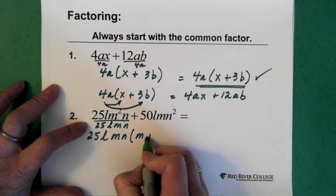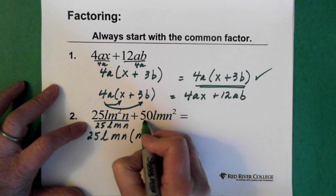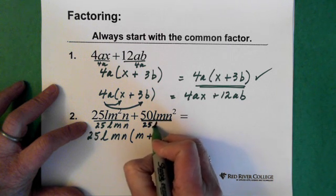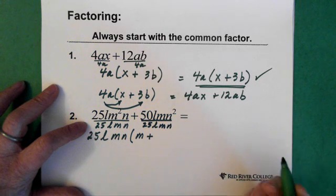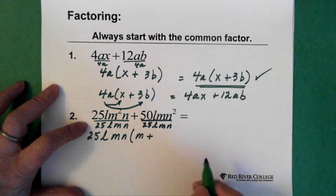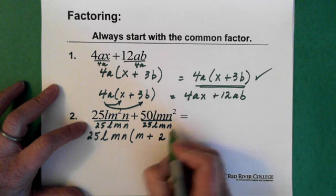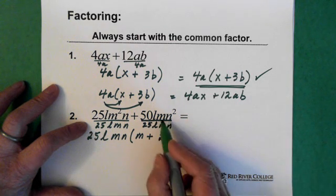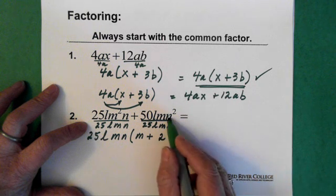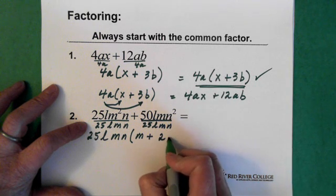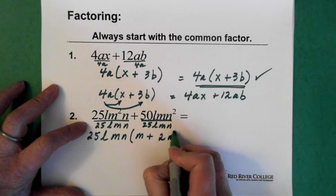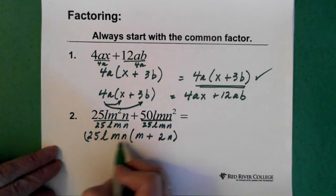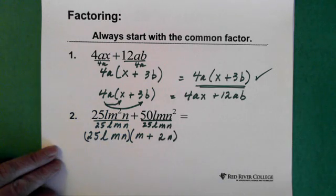Then we have a plus sign, so we put a plus there. And then we divide this one by 25, L, M, N. 50 divided by 25 is 2. The L divided by the L is 1. The M divided by the M is 1. And the N squared divided by the N is N. So there you go. So we have this term here multiplied by that term.